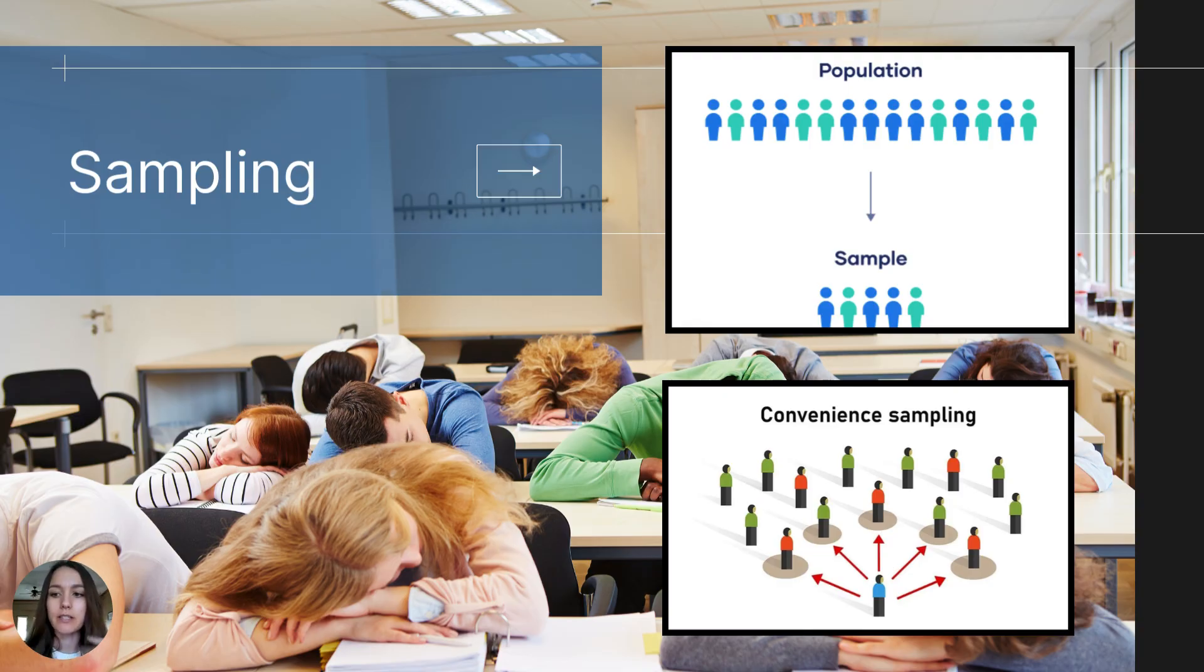That way that that group of students proportionately reflects the whole population of high school students. So when I'm selecting those students, I want to make sure that I have a proportionate number of freshmen and sophomores and juniors and seniors that reflect the whole population, balancing genders and academic levels. Hopefully that it then reflects that population. Sometimes studies use what's called convenience sampling, which is when they select participants based on just ease and accessibility and availability